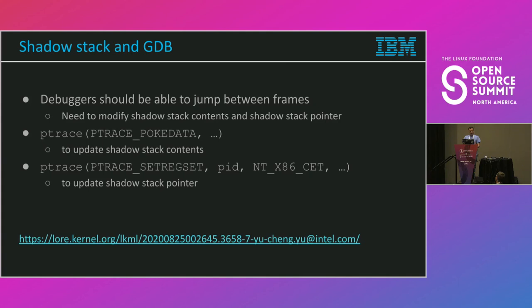Shadow stack is nice and good if your program doesn't do weird things or if you don't want to debug it with GDB. GDB needs to switch frames in random order — when you go up or down several frames and then continue execution, the contents of the stack and the shadow stack will be different. What people suggested is to use ptrace interfaces to adjust the contents of the shadow stack like normal data. There is a special API for ptrace that allows modifying the shadow stack pointer and the hardware registers associated with the shadow stack machinery. So if with GDB you go down three stack frames, GDB will also rewind the shadow stack to the point where it matches the normal stack of the program.